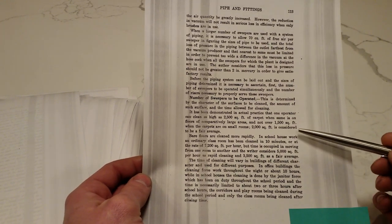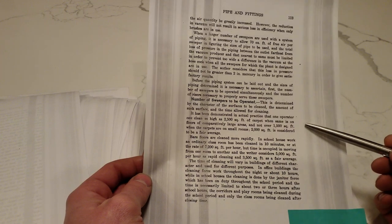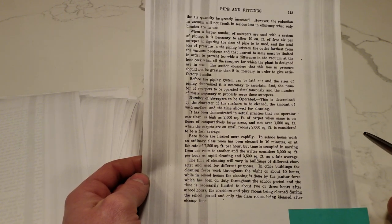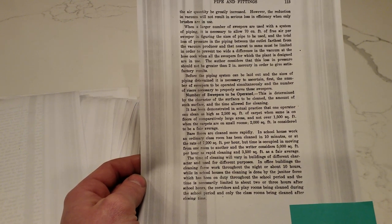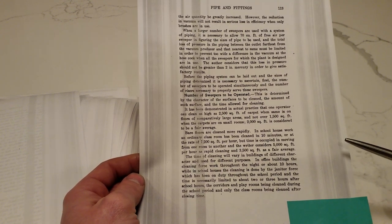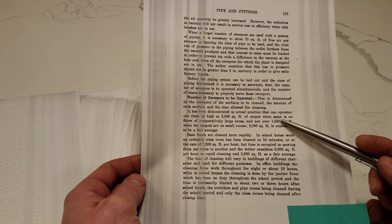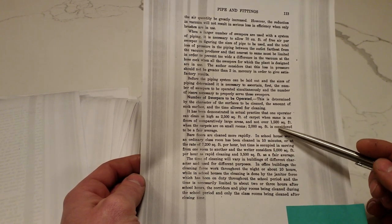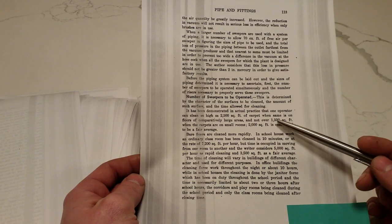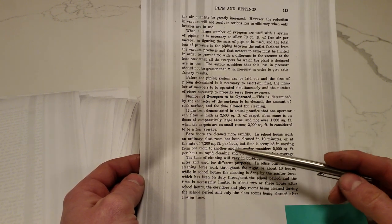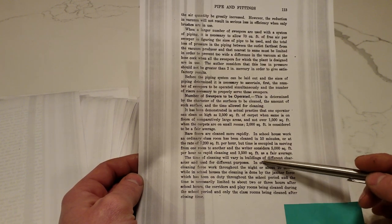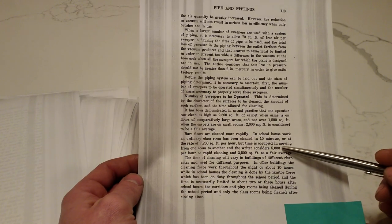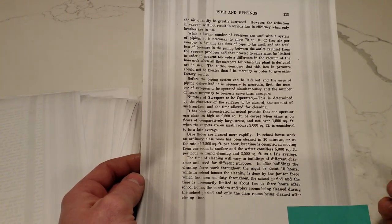Number of sweepers. So, this talks about the amount of floor space on average that one sweeper can clean. And, this is used in calculating how many sweepers your plant needs to be set up for based on the size of your building. 2,500 square feet of carpet per hour. 1,500 when they're in small rooms. Up to 7,200 square feet per hour on their floors is optimal. 5,000 on average. 3,500 square feet as a fair average.